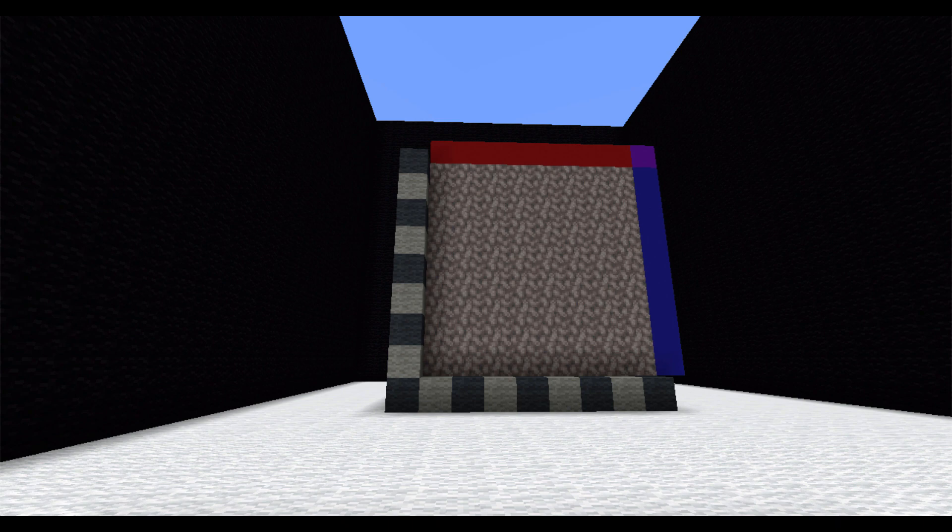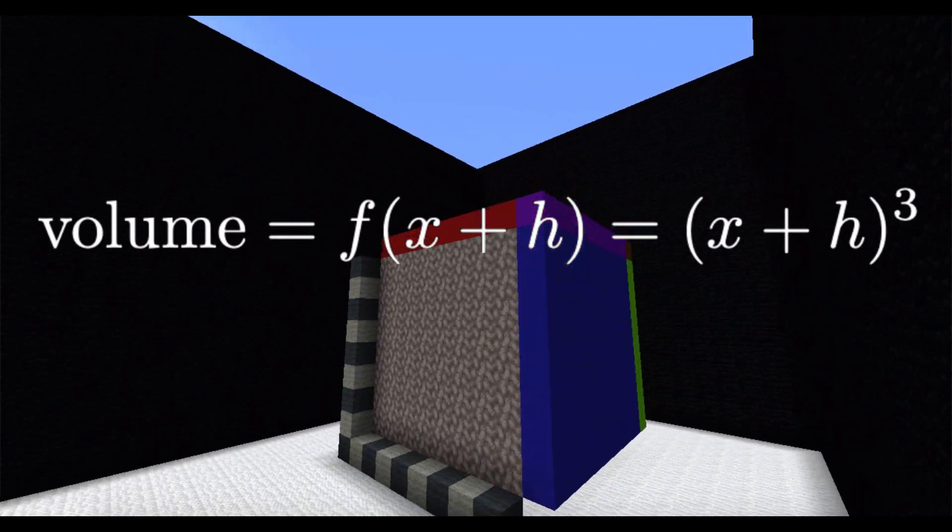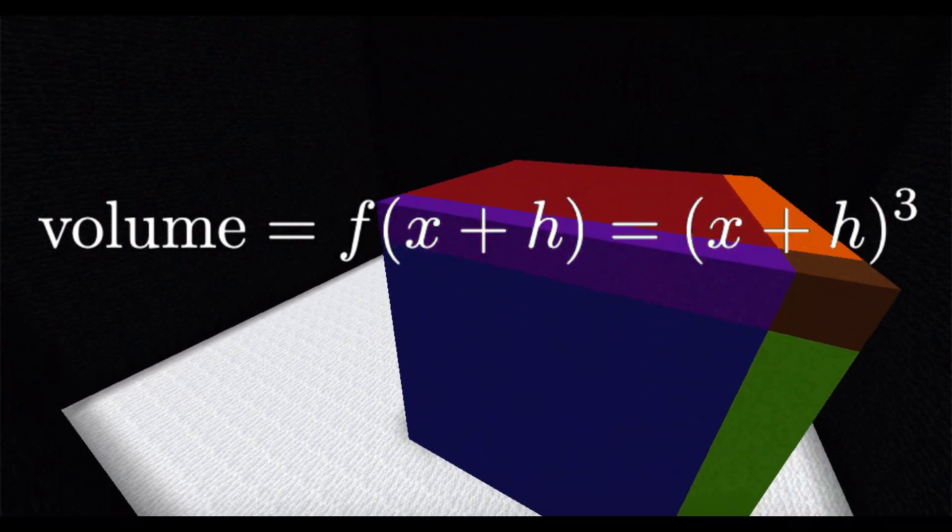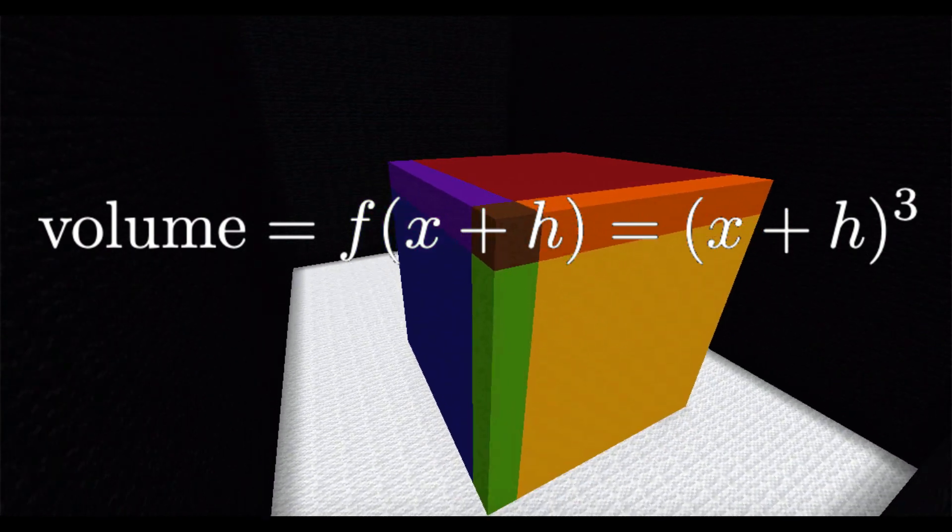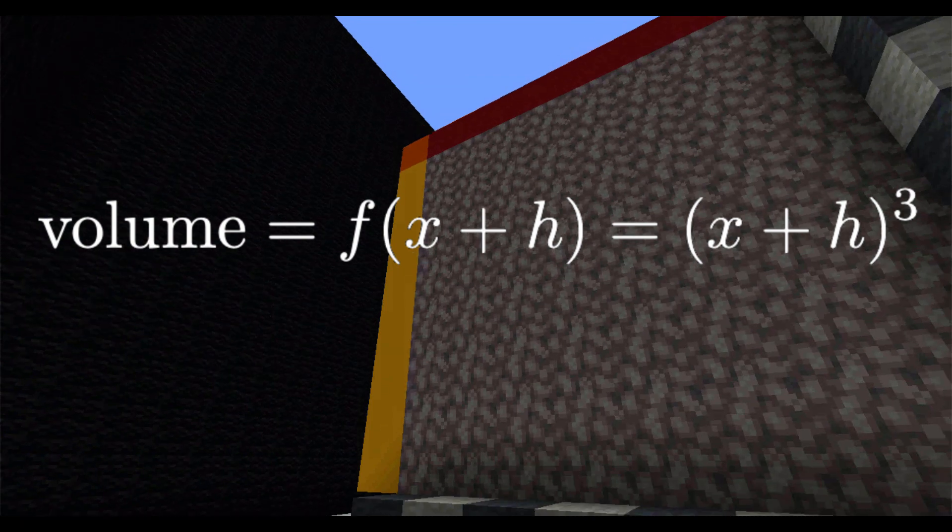By the same logic, f of x plus h is the volume of a cube with side lengths x plus h, where h is a small number. So you can see we still have all the gray blocks as before, but we have this additional layer of colored blocks.